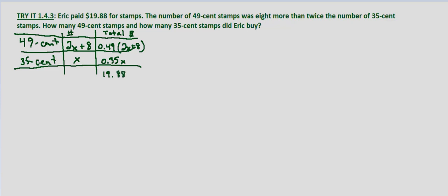So let's write out the equation: 49 cents times the number of 49-cent stamps, which is 2x plus 8, plus 35 cents times x equals $19.88.